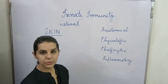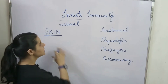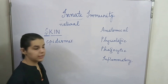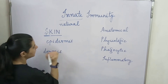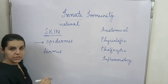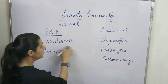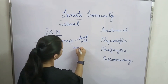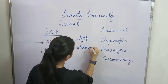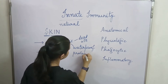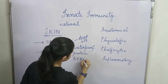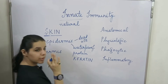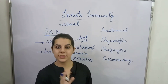Skin does not allow any microorganism entry. The skin has two layers: the first is the epidermis, the outer layer, and the second is the dermis. The epidermis usually consists of dead cells and a waterproof covering made of the protein keratin, which protects and inhibits any microorganism.